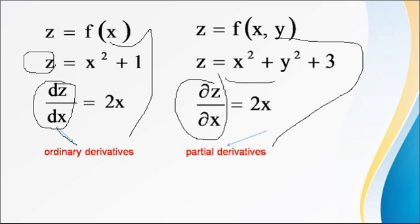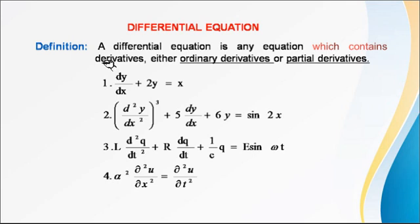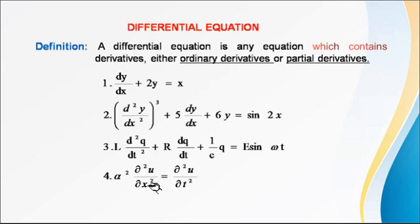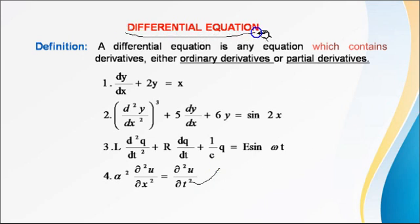What is a differential equation? An equation which involves derivatives is known as a differential equation. The derivatives can be either partial derivatives or ordinary derivatives. For example, dy/dx + 2y = x is an ordinary differential equation, and ∂²u/∂x² = ∂²u/∂t² is a partial differential equation. So generally, differential equations are divided into two types: ordinary differential equations and partial differential equations.